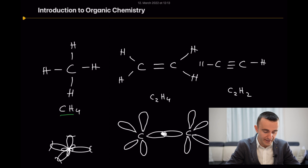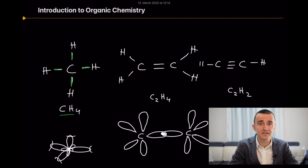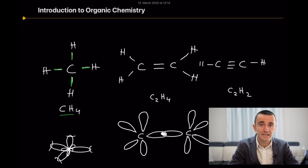As you can see here, methane has formed four bonds. All four bonds here are single bonds, and if you have a single bond it is always a sigma bond.